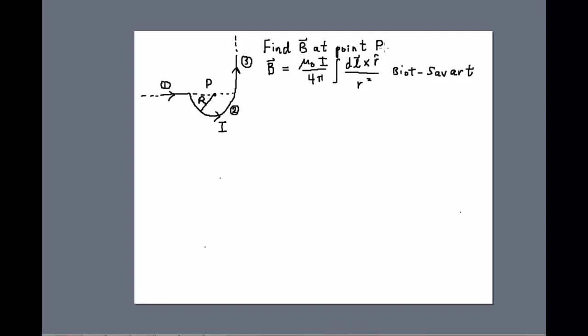What we'd like to do is find the magnetic field, total magnetic field at point P which is the center of the semi-circular portion of the wire. Remember that the Biot-Savart Law is given by mu naught I over 4pi times the integral along the length of a current carrying wire of the quantity dL cross R hat over R squared.